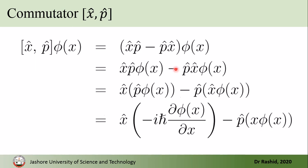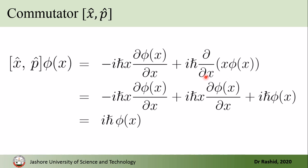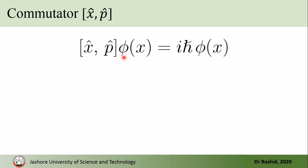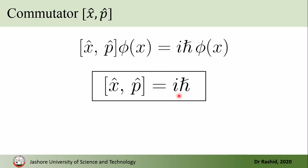We get a plus sign because there was a minus in the commutator and p-hat also carries a minus, so these cancel to give a positive term. When we act the differential operator on the product of two functions, we get two terms, and one of them cancels with the opposite sign term, leaving only iℏ·phi(x). Therefore, the commutator acting on phi(x) gives iℏ·phi(x). Since this holds for any arbitrary function phi(x), we can drop phi(x) and write that the commutator [x-hat, p-hat] equals iℏ.